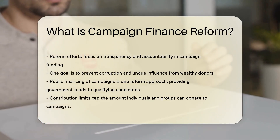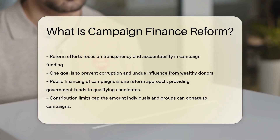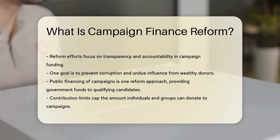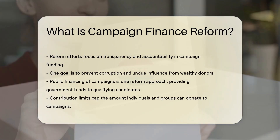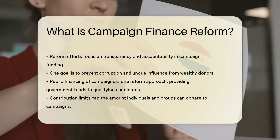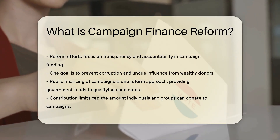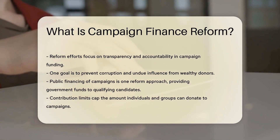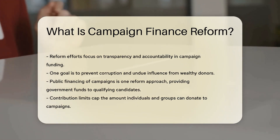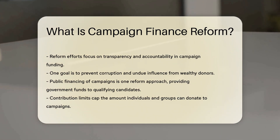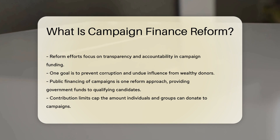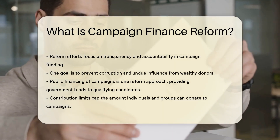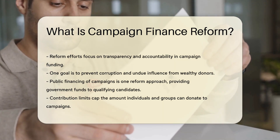Public financing of campaigns is one reform approach — it provides government funds to qualifying candidates. Contribution limits are another reform measure; they cap the amount individuals and groups can donate. Disclosure requirements mandate that campaigns report their funding sources, helping voters see who is financing candidates.